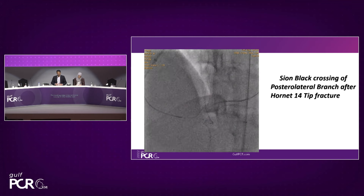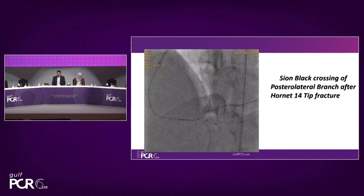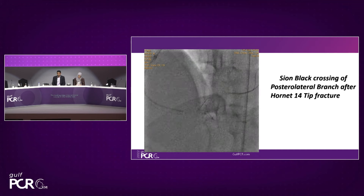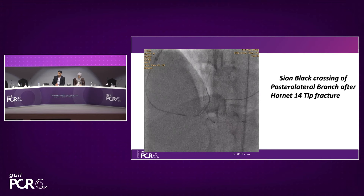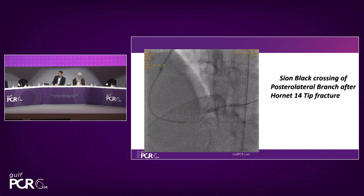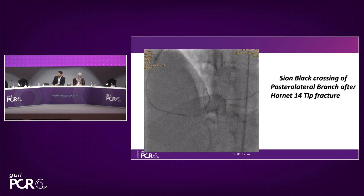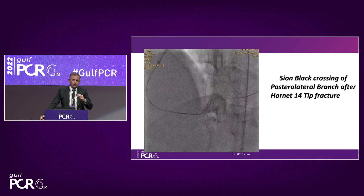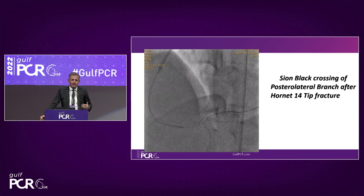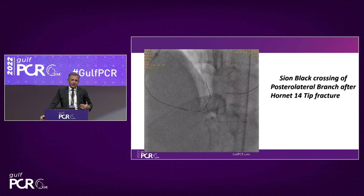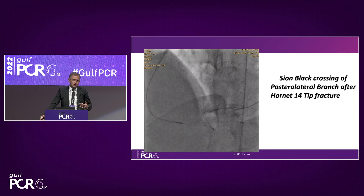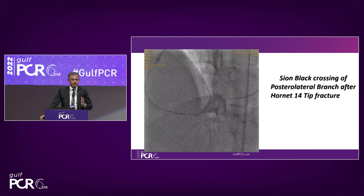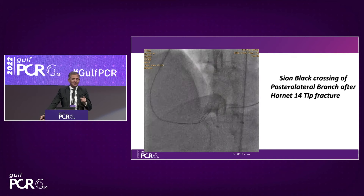IVUS is important in complex CTO. Many operators think CTO is already too complex to add IVUS, but the concept is different: understanding IVUS images makes your procedure simpler and safer. IVUS is essential in the modern approach to PCI. IVUS also has great value in minimizing the number of stents needed. If IVUS shows negative remodeling — no plaque, the vessel under-perfused — you can avoid stenting. After revascularization in CTO, the vessel may be healthy and large at follow-up, and a small stent placed during CTO would be inappropriately sized.